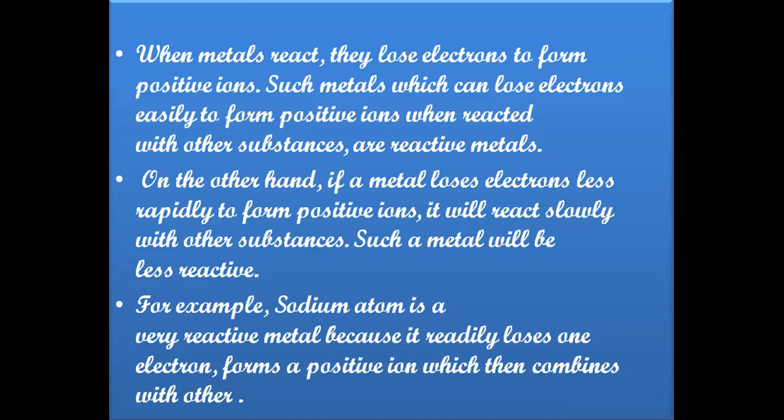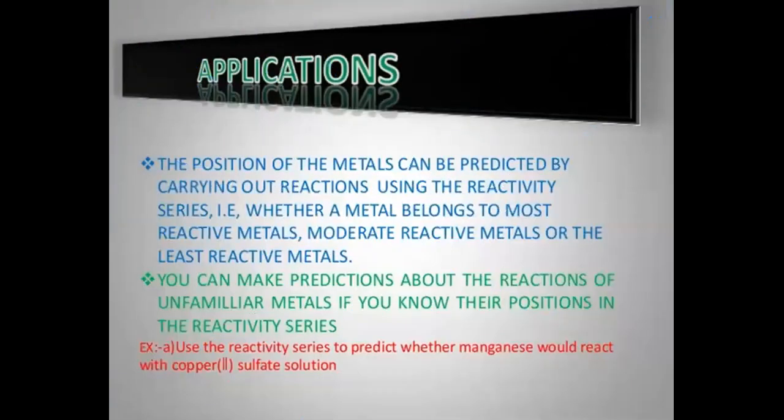For example, sodium is a very reactive metal like potassium because it readily loses one electron and forms a positive ion which combines with other elements. As we discuss the chemical properties of metals, we study the reactivity series. The series can be used for various purposes — for instance, the position of metals can be predicted by carrying out reactions using the reactivity series.